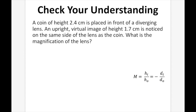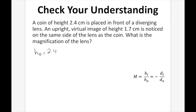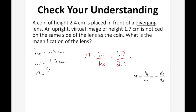A coin of height 2.4 cm is placed in front of a diverging lens. An upright virtual image of height 1.7 cm is noticed on the same side of the lens as the coin. What is the magnification? HO equals 2.4 cm, HI equals 1.7 cm. Using M equals HI over HO: 1.7 divided by 2.4 equals 0.71. The image is smaller than the object, so magnification is less than one.